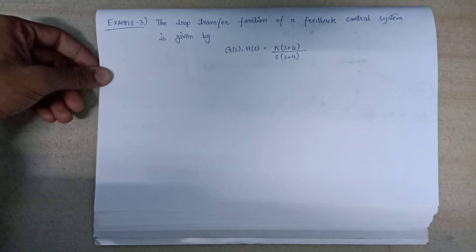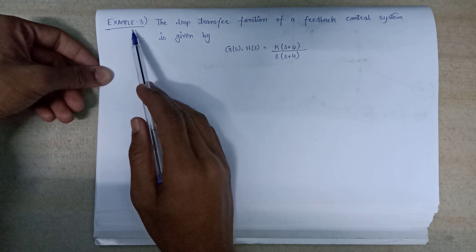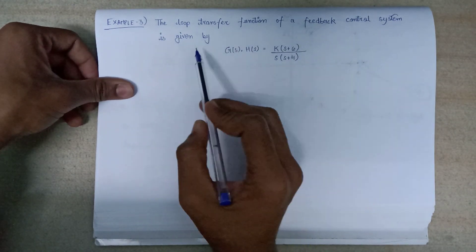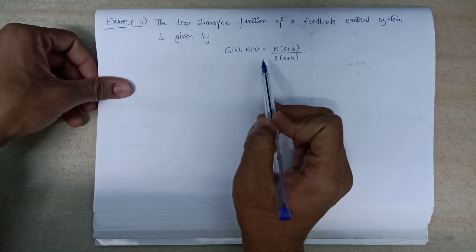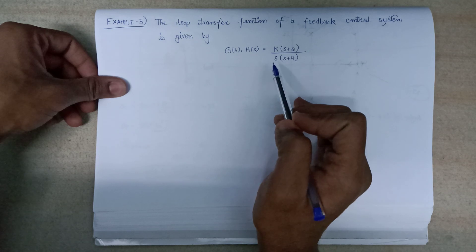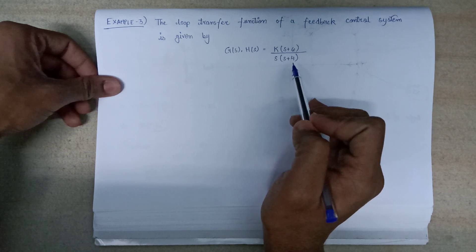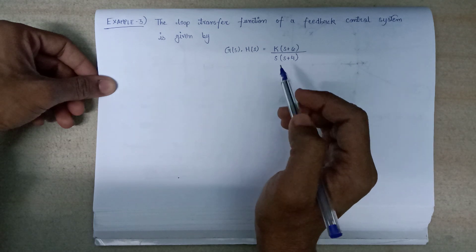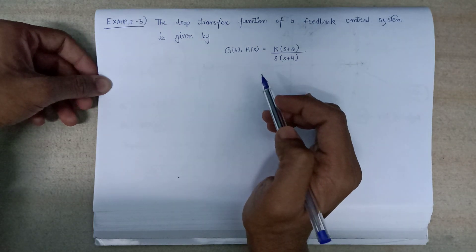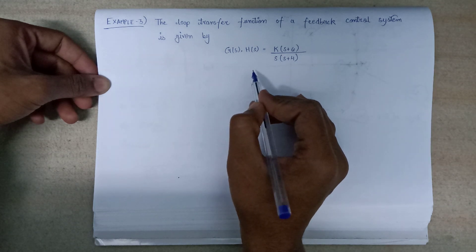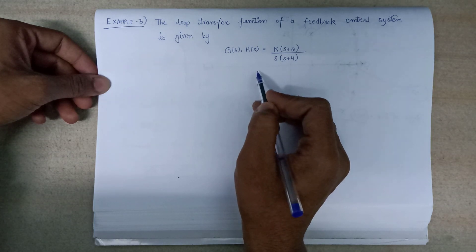Welcome all. In this lecture we are going to solve one more example, that is example number 3. The loop transfer function of a feedback control system is given by G(s)H(s) equals K(s+6) over s(s+4). We need to plot the root locus on the S-plane, following all nine steps.